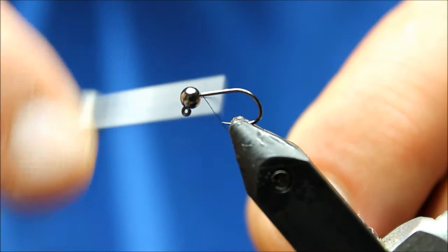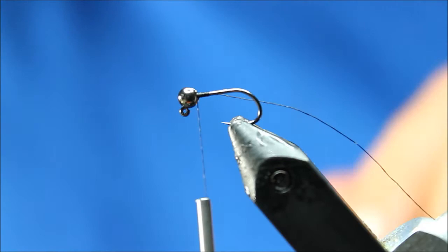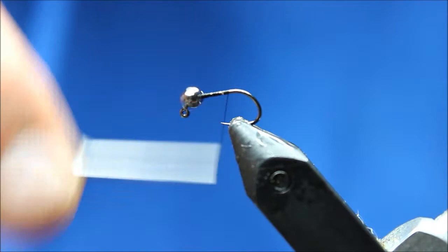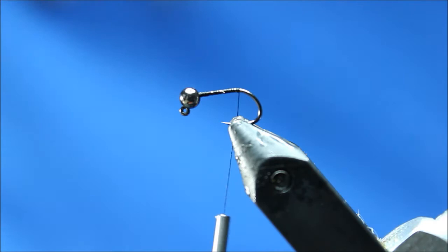What I'm going to do is start with some ADOT uni black thread on a Big T size 16 jig hook with a 3.0 millimeter bead. We're going to go ahead and put a thread base in.